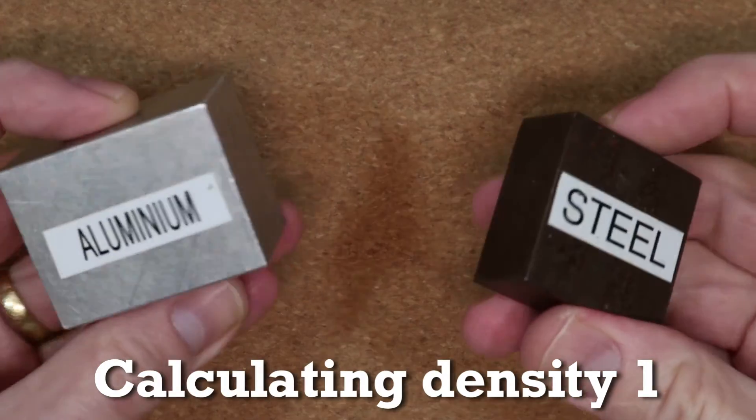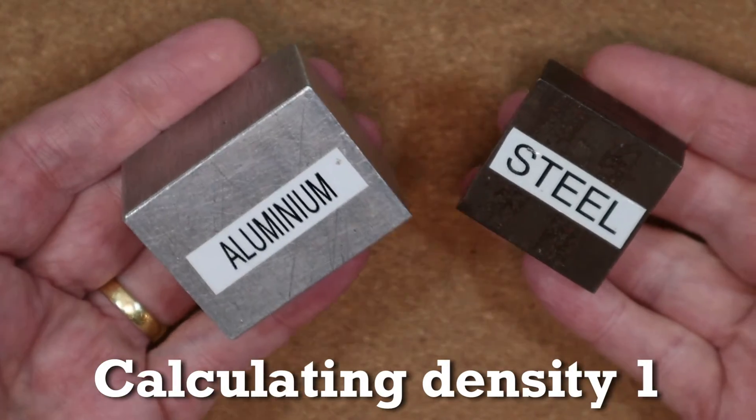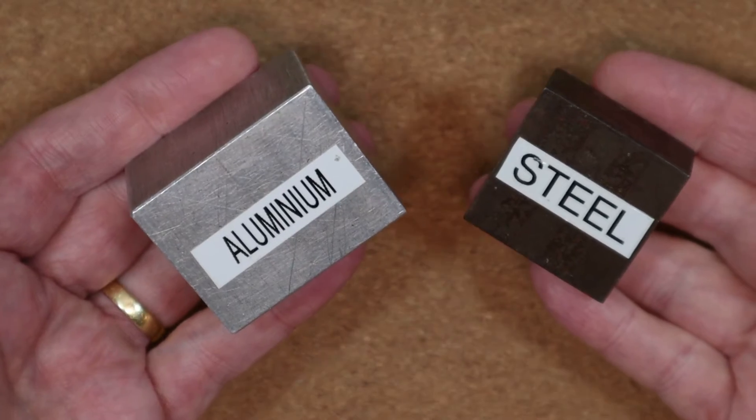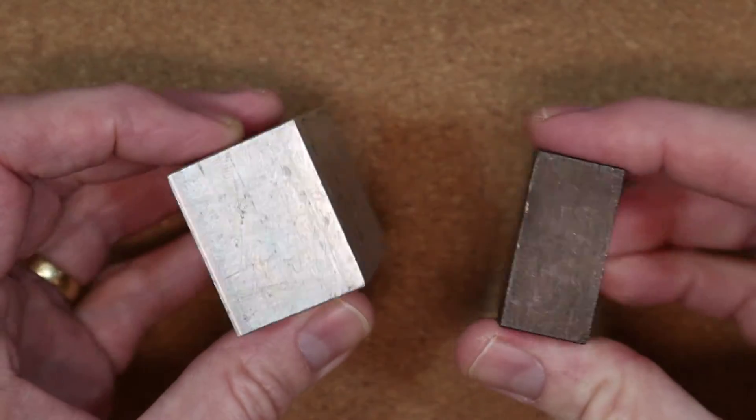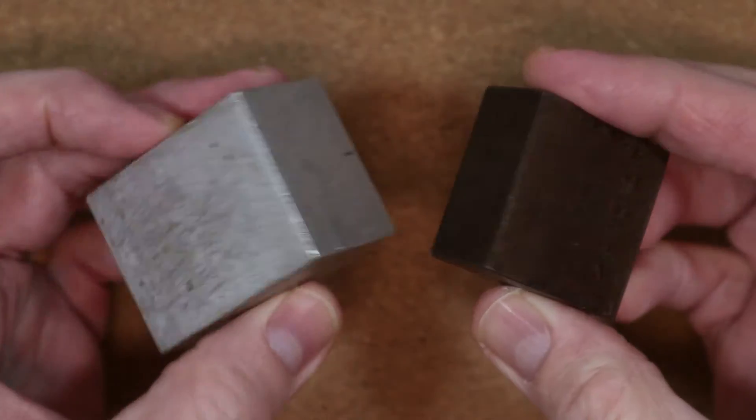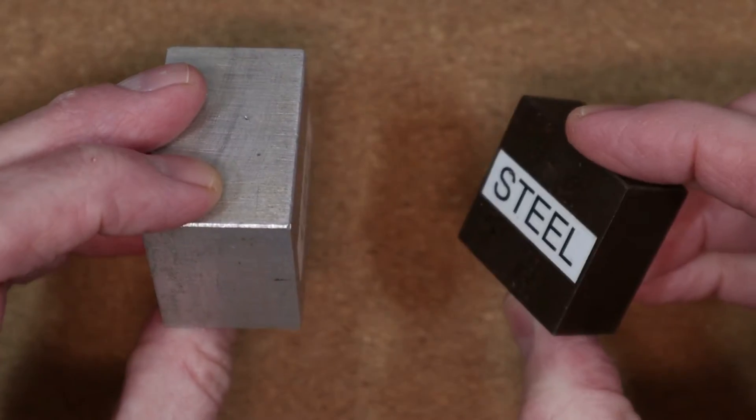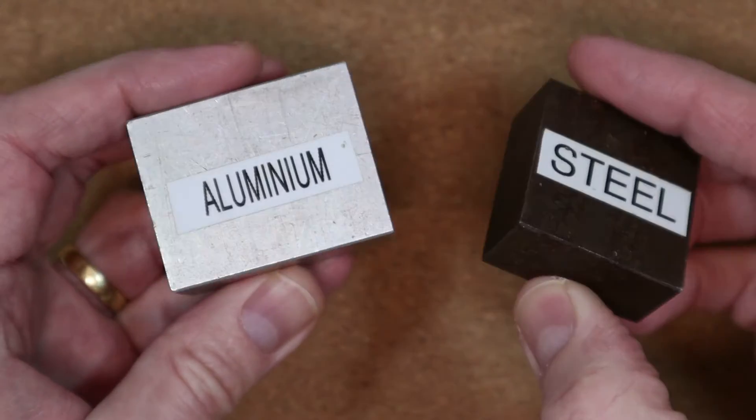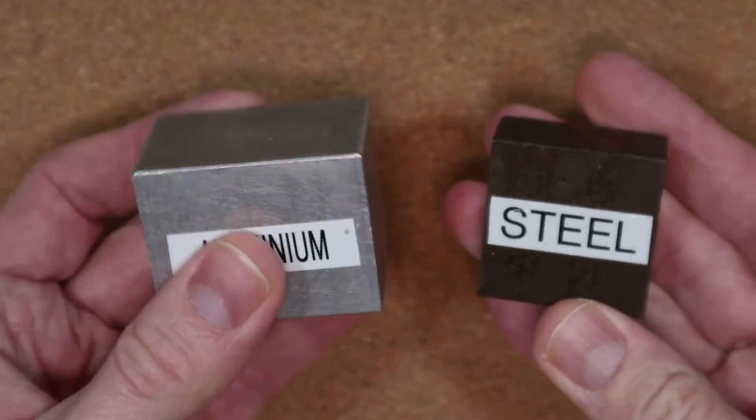Hi folks, when I hold these blocks in my hand, it feels like the steel block is heavier than the aluminum block, although the aluminum block, or aluminium for any viewers in the US, is much larger. That's because steel has a greater density. But what is density and how can we measure it?